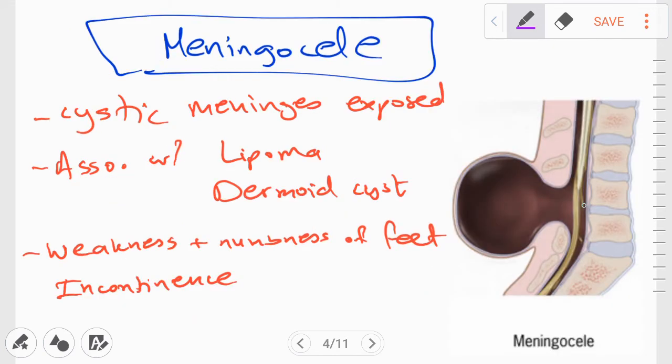So next, we'll move on to meningocele. Meningocele is characterized by the exposure of the cystic meninges. But it is important to note that the spinal cord itself is intact. Unlike myelomeningocele, where spinal cord was also exposed.